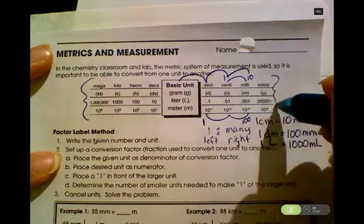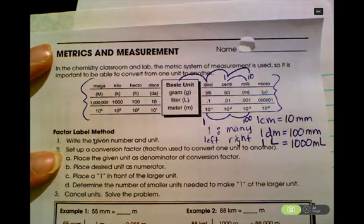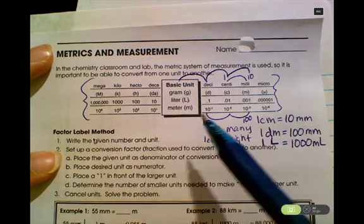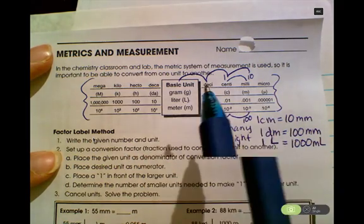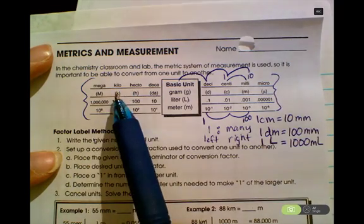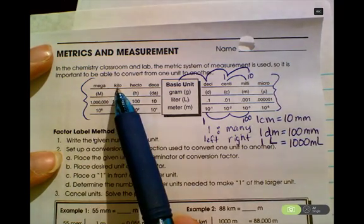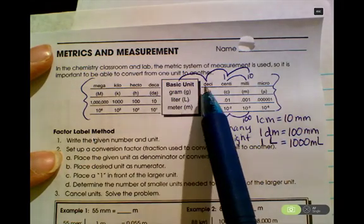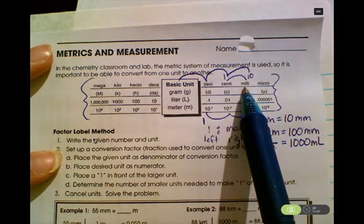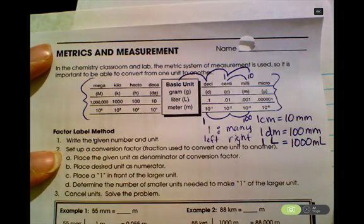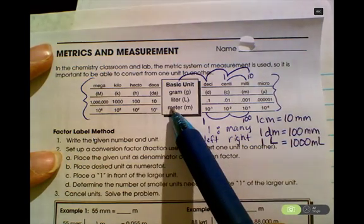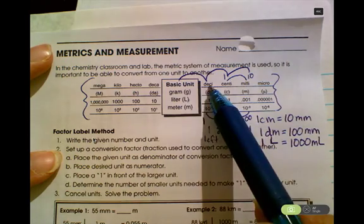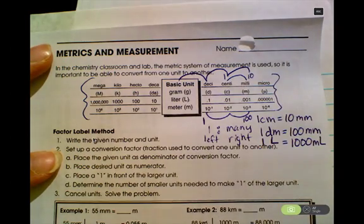So all you have to do really is memorize this and then you can know all your metric relationships that you need to know. Some people will have made up a mnemonic to help them remember. Here's one that I know: King Henry died by drinking chocolate milk. There's also King Henry died moaning, laughing, groaning during Christmas morning. There's a whole bunch of different ones, so you need to memorize that.